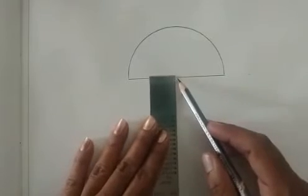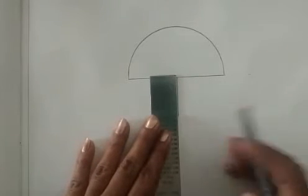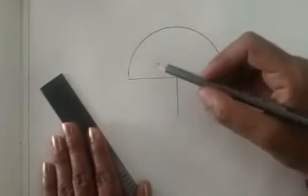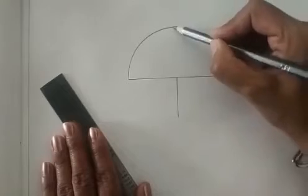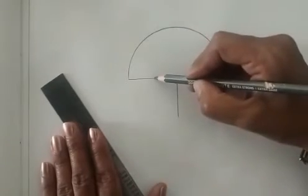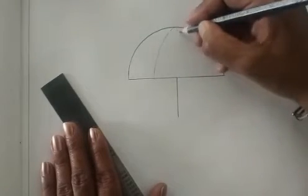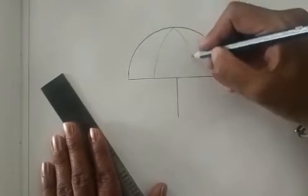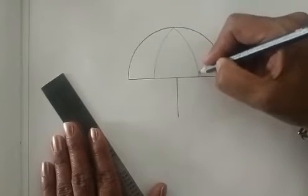You can make a half circle here. Standing line and here we will make two curved lines. Like this.